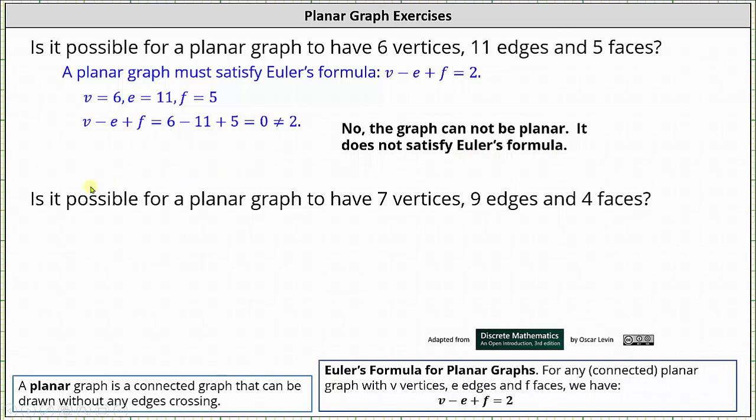For the second example, is it possible for a planar graph to have seven vertices, nine edges, and four faces? Here we have v equals seven, e equals nine, and f equals four.